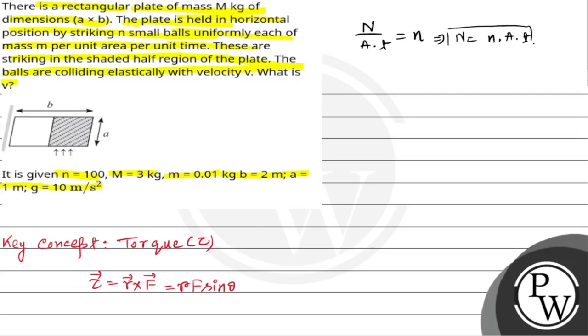Now we have this horizontal plate. The horizontal plate's half region, that is the shaded region. This region, capital N number of balls are striking. They are striking with velocity v and making elastic collision. After collision, the velocity of the ball is v again.